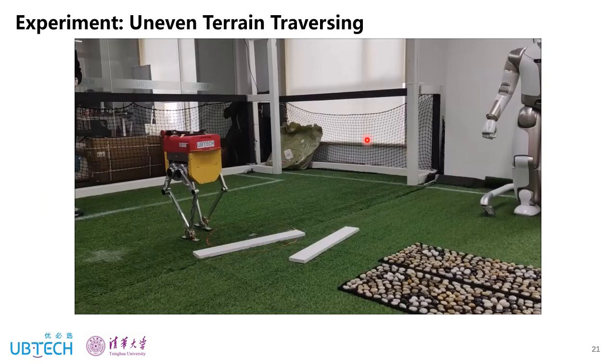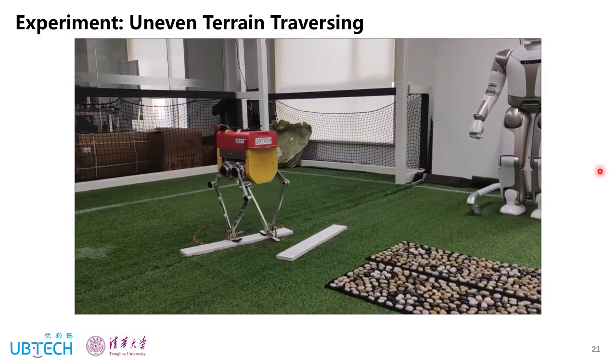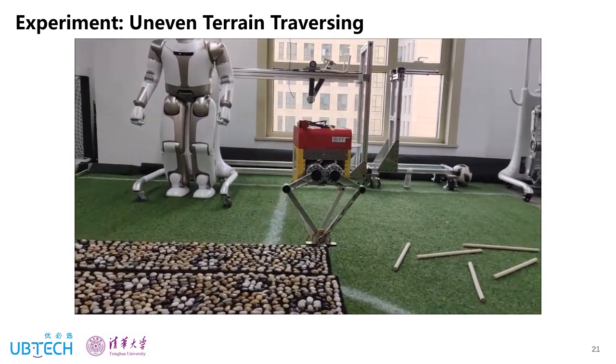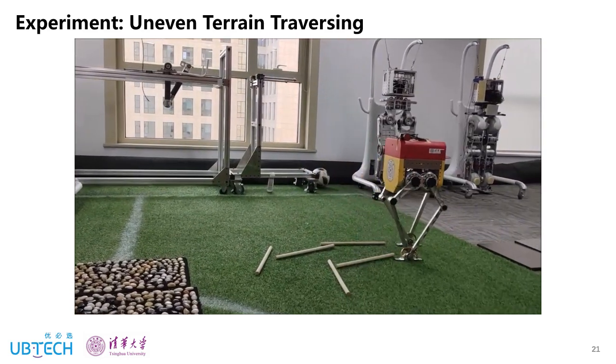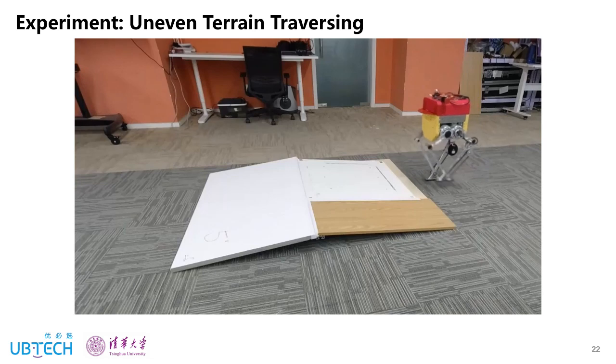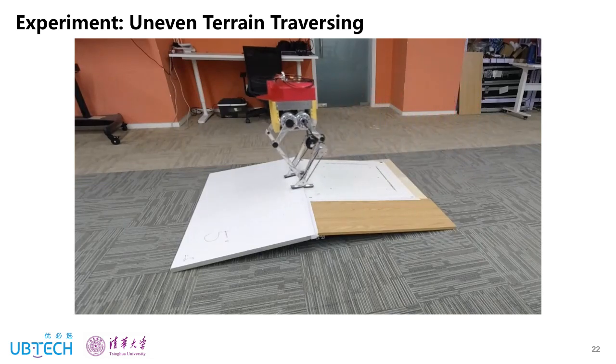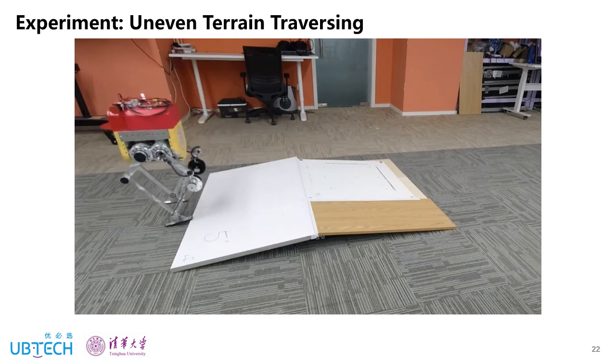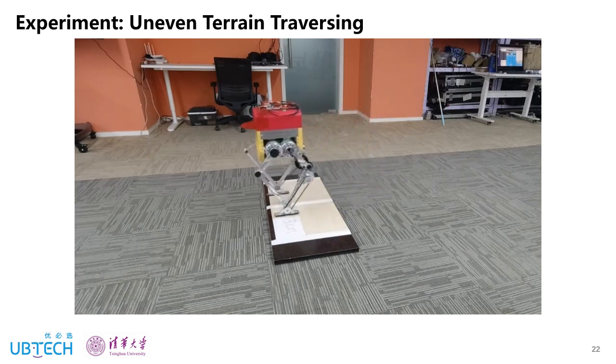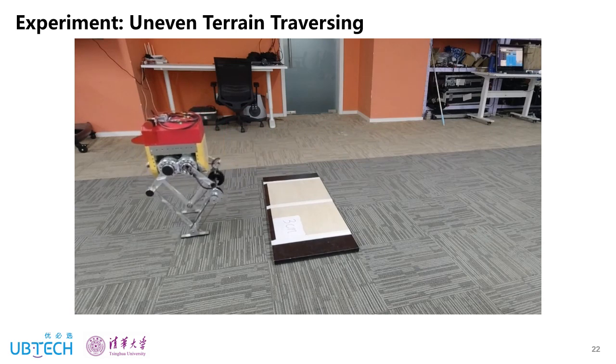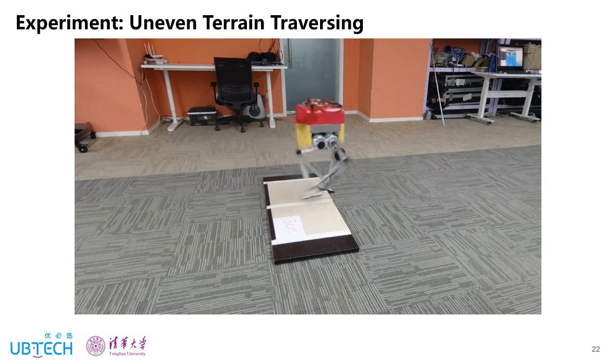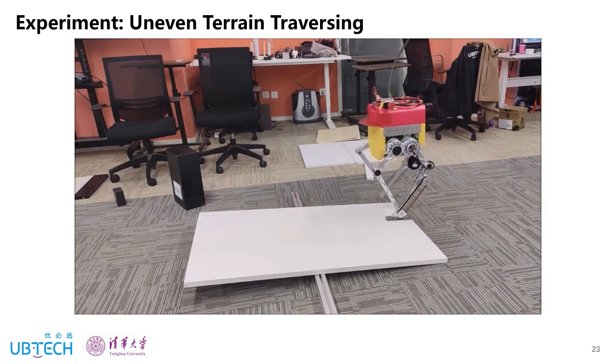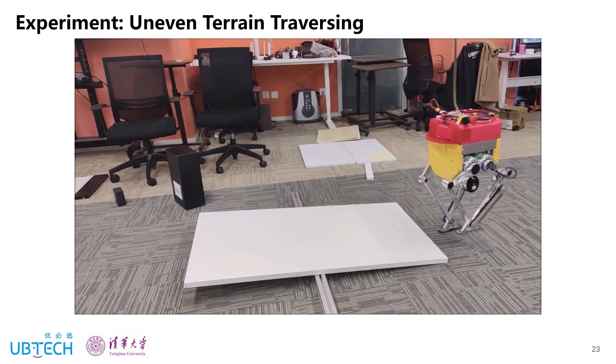Next, I will show some preliminary uneven terrain experiments. First is the robot with passive ankles walking over 2-centimeter boards, rubbles, and some wooden sticks. Then, this is the robot with active ankles walking over 5-degree slopes and 3-centimeter boards. When walking on the slope, sometimes, the robot steps outside of the board. The robot carries the balance by adjusting the step location and step timing.